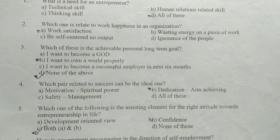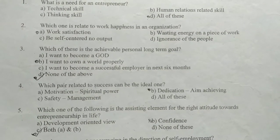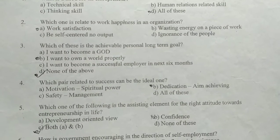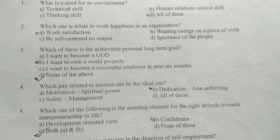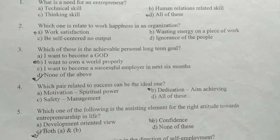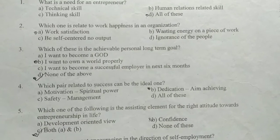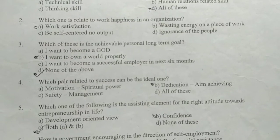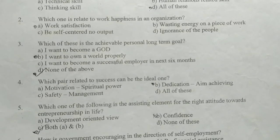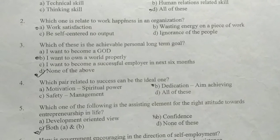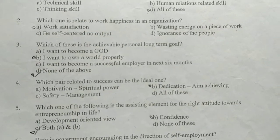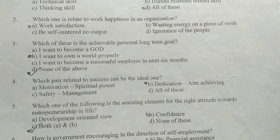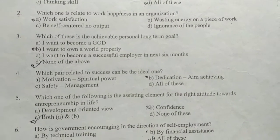Which one is the achievable personal long-term goal? Options include: 'I want to become a god,' 'I want to own world property,' and 'I want to become a successful employer in the next six months.' None of the above is also an option.